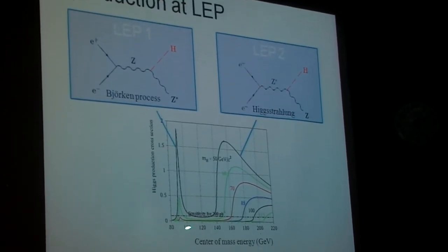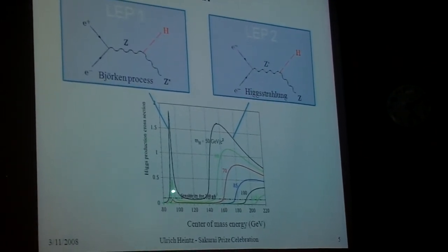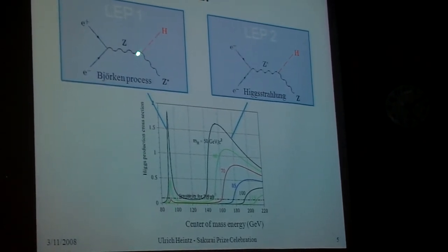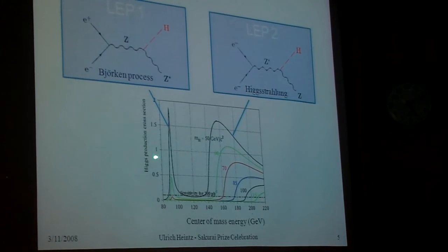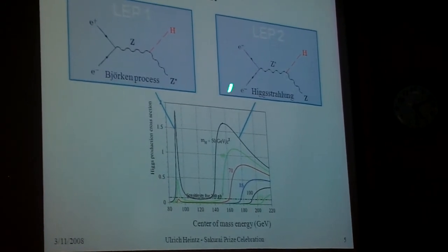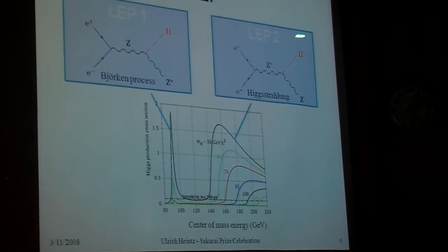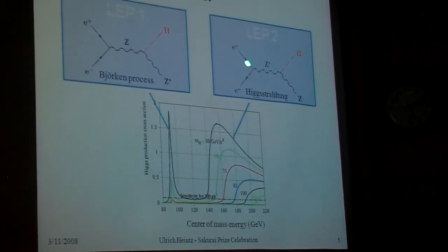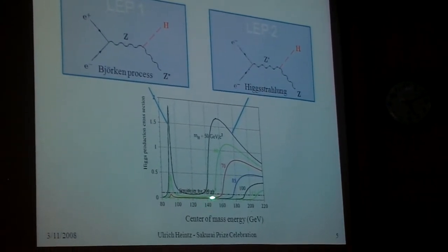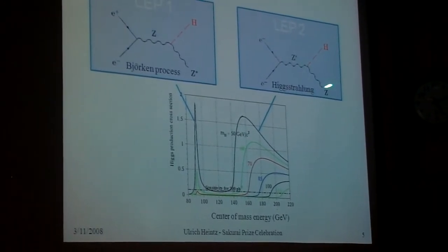And so here we see the center of mass energy, here we see the cross-section for Higgs production. This peak here is at the Z mass, and the different color lines are for ever heavier Higgs boson masses, and you see that the heavier the mass is, the smaller the production cross-section. So when the Higgs boson mass approaches the Z mass, then you don't get any production anymore in this scheme. You have to go to higher energies, then you produce off-shell Z bosons that then can decay to an on-shell Z boson and a Higgs boson, and that's what you see here, and then the cross-section turns up when you reach the center of mass energy equal to the Higgs boson mass plus the Z boson mass.